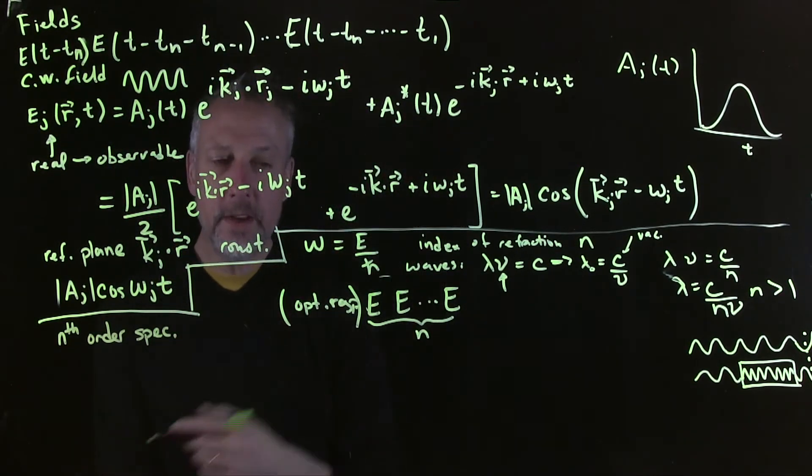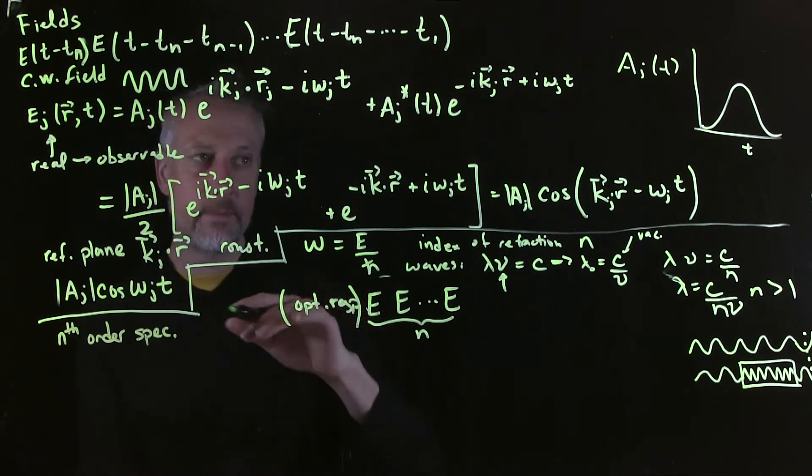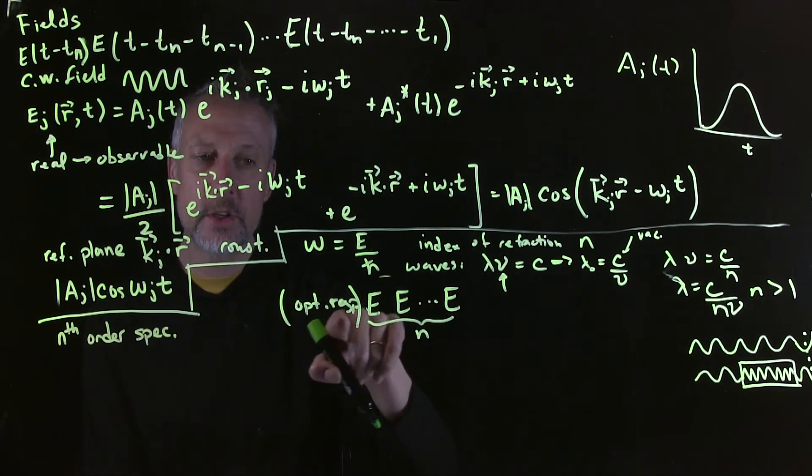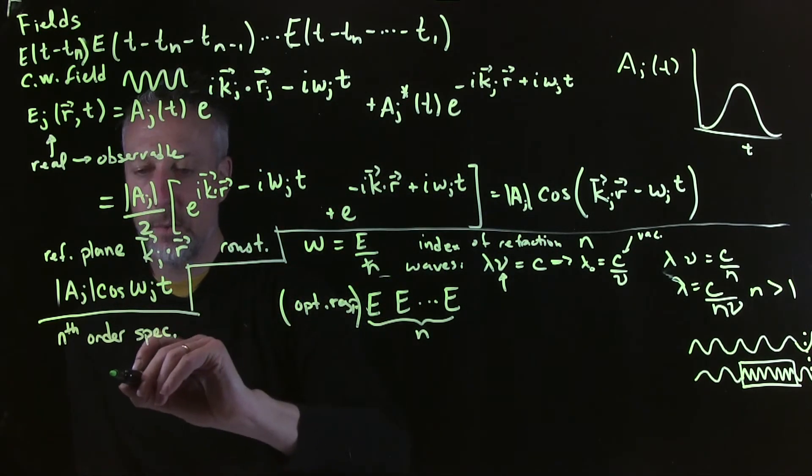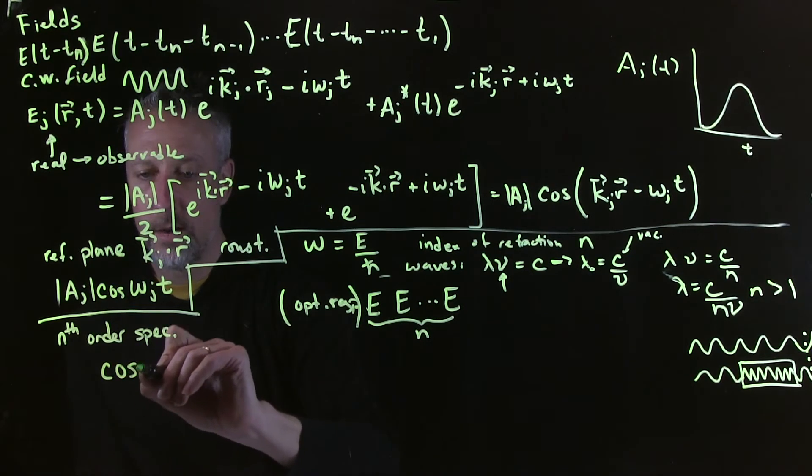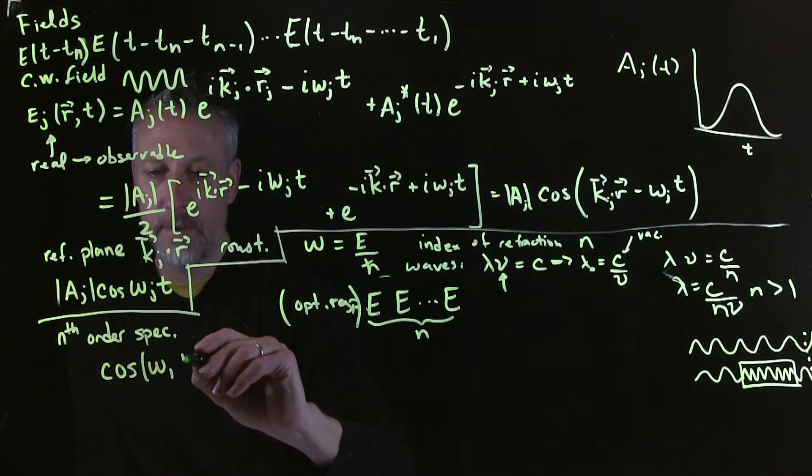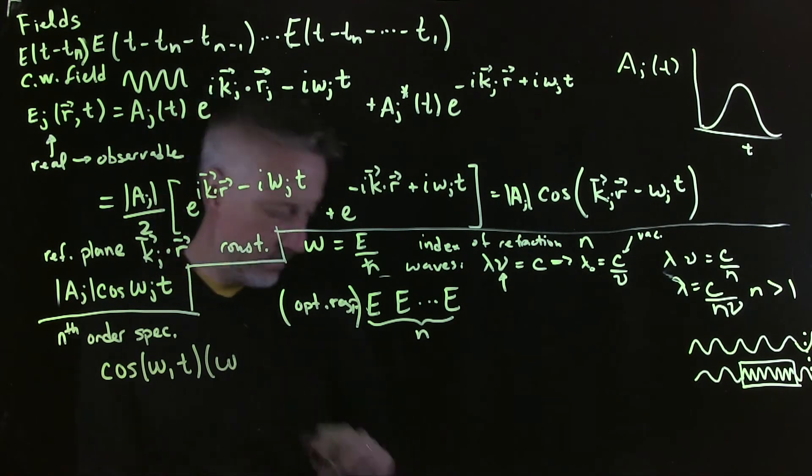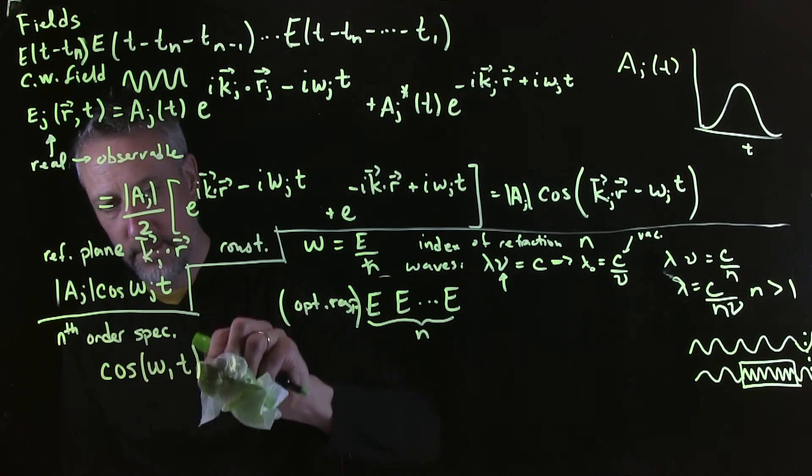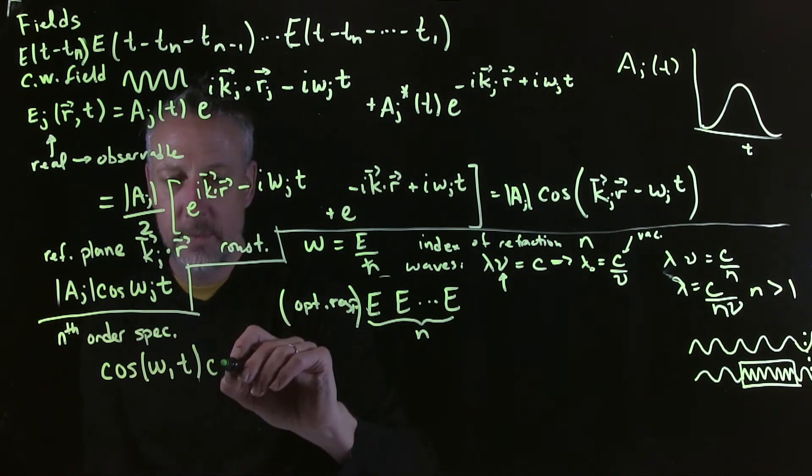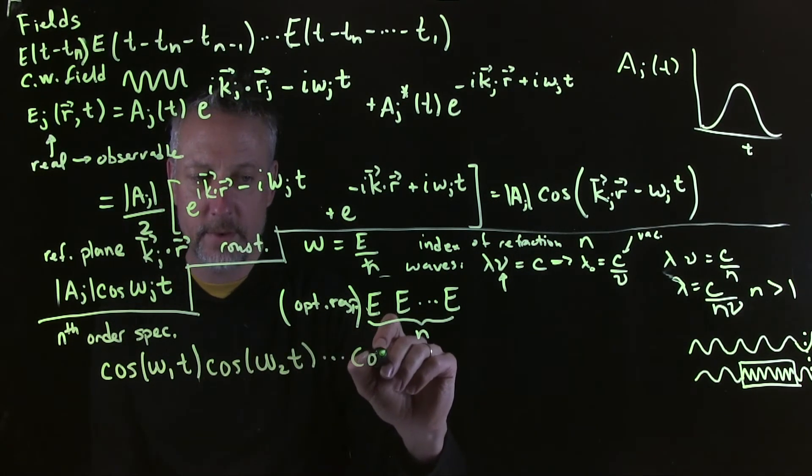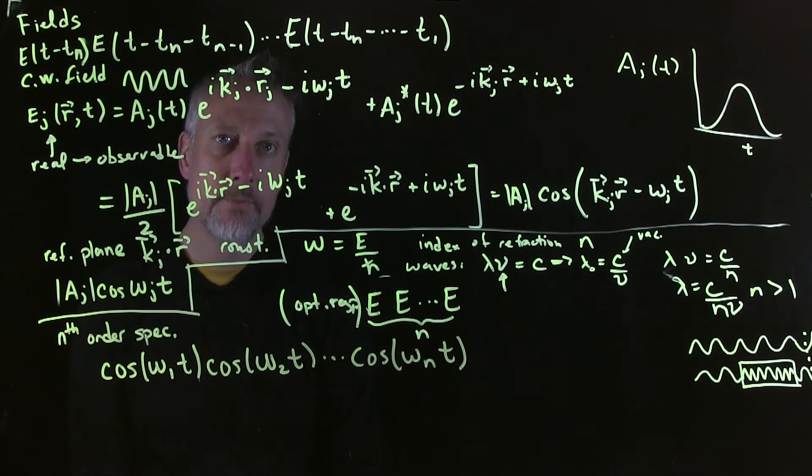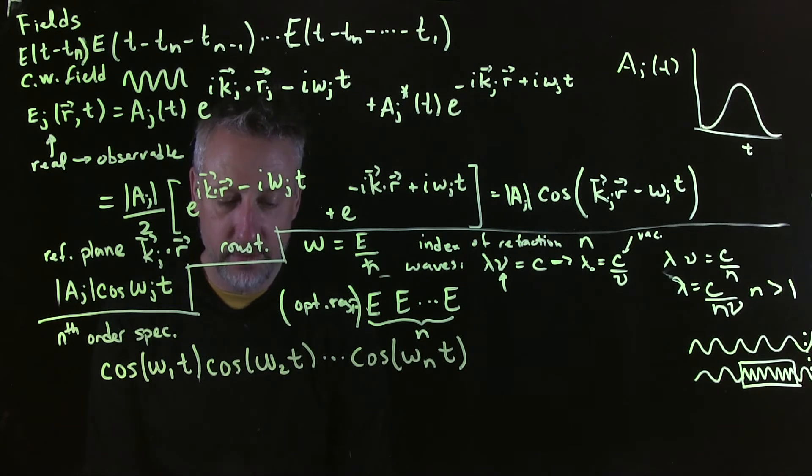So what's interesting about this then is this means that if we have nth order spectroscopy, and we know we're going to have the product of fields, then we should think about what happens if we just ignore the complexities of the response function, just assume it's like a uniform response. It doesn't depend on frequency in any way. Then what we can do is we can say I'm going to have cosine omega 1 times t times cosine omega 2 and so on all the way up to cosine omega n.